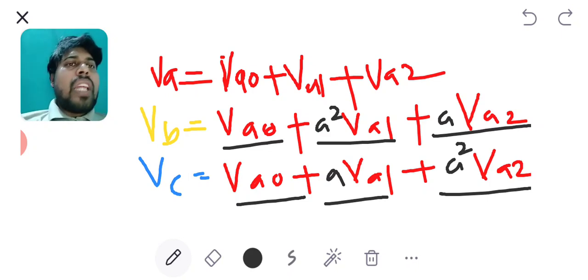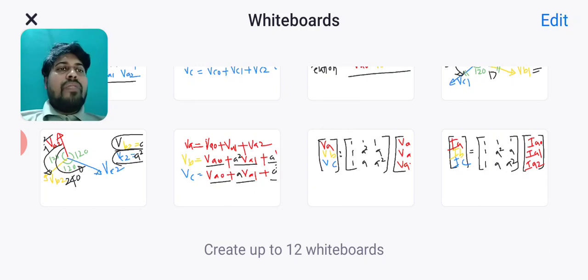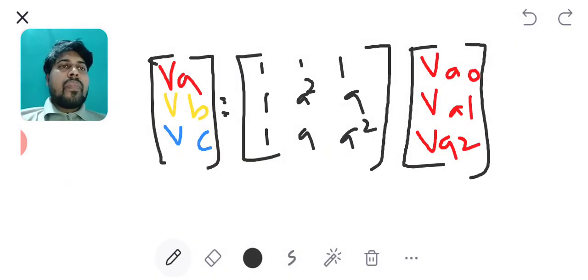So all three equations at the RHS part VA0, VA1, VA2 are common. If I take common outside, the expression will become VA VB VC equals 1 1 1, 1 a² a, 1 a a² into VA0 VA1 VA2.